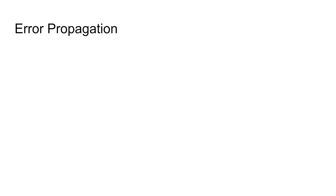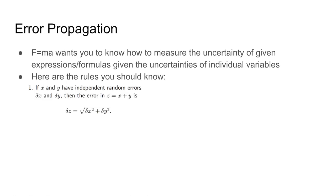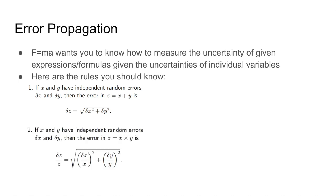One topic that the F=ma has been throwing at us more recently is error propagation. The F=ma wants you to know how to measure the uncertainty of given expressions or formulas if you're given the uncertainties of the other individual variables. Here are the rules you should know: the addition rule — the uncertainty of z is simply the square root of the sum of the squares of the other uncertainties if x + y = z.